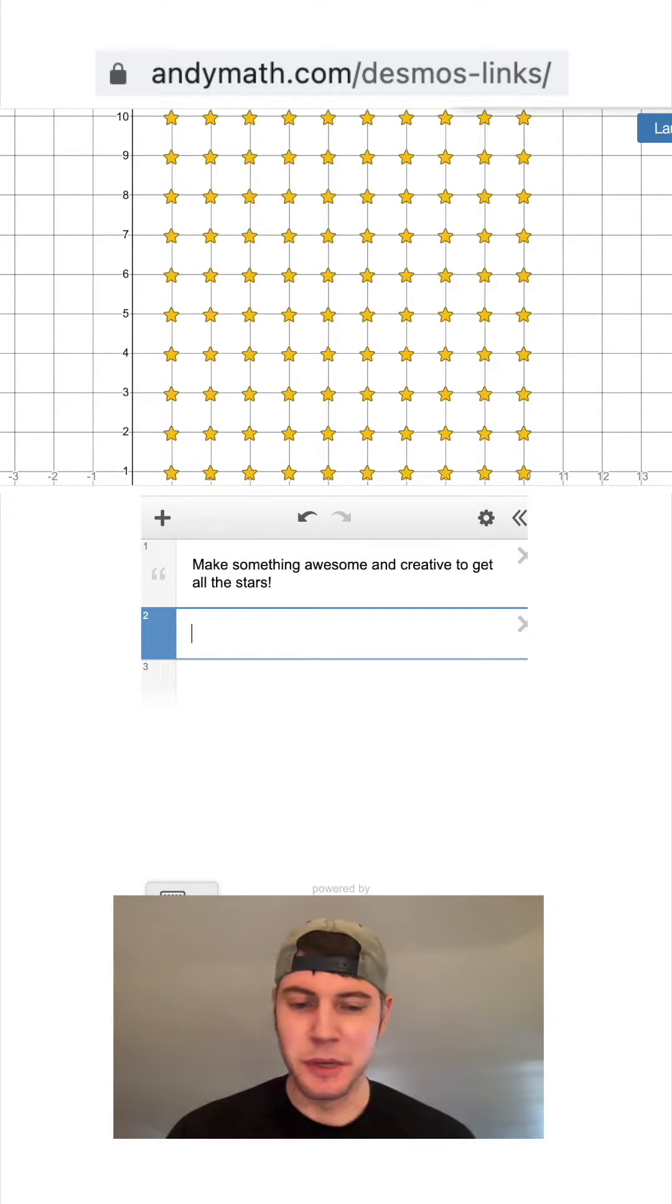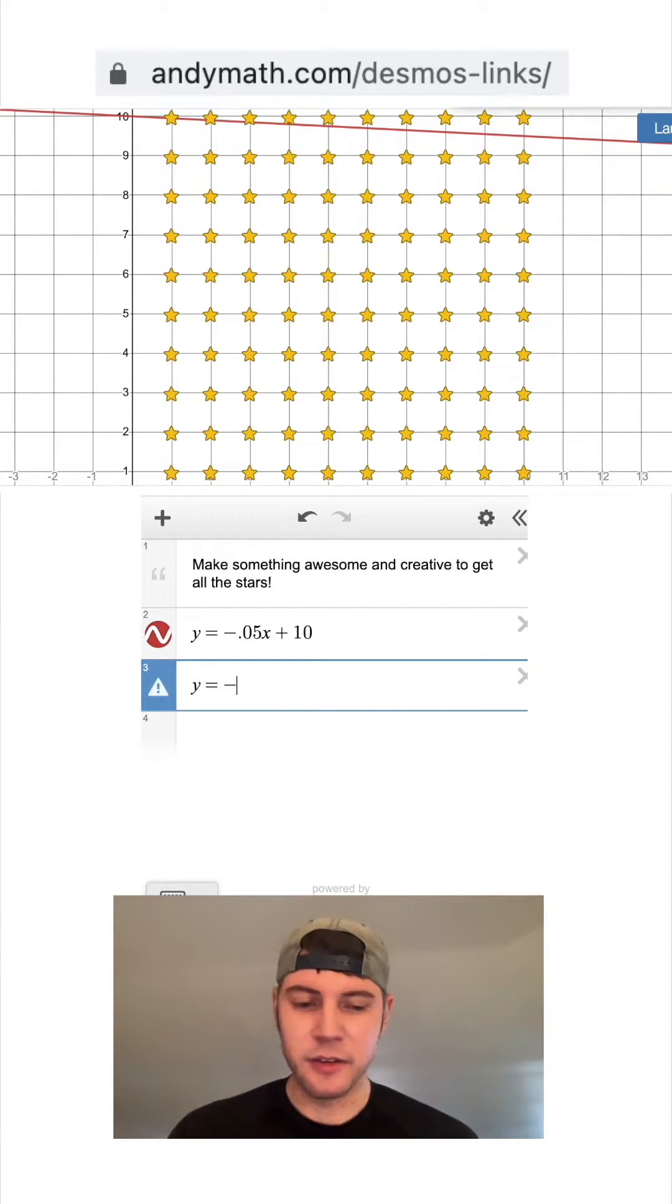We'll do y equals mx plus b. Let's say y equals negative 0.1x plus 10. Too steep. Let's go 0.05. Looks about right. We just want to make more of those. Let's say y equals negative 0.05x plus 8, and so on.